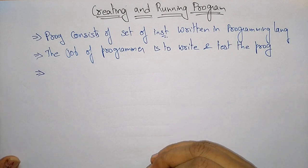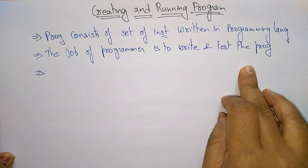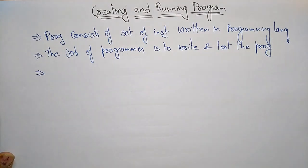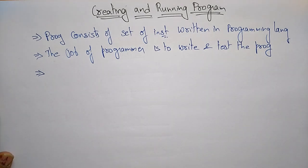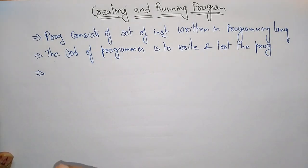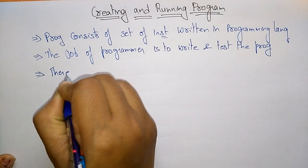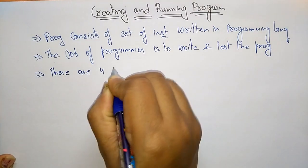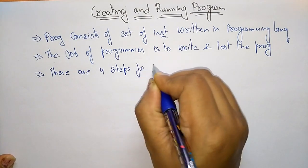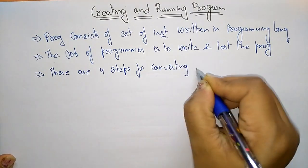Whatever English-like statements we have written must be converted into machine language so that the CPU — the processor inside the computer — can read the instructions given by the user and produce results. That machine language output is then converted back into high-level language so the programmer and user can easily understand it. There are four steps for converting a C program into machine-level language.